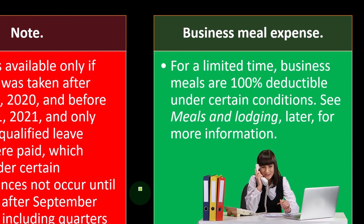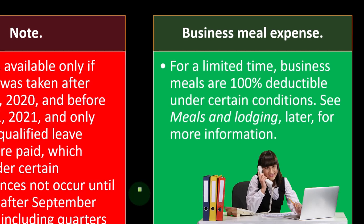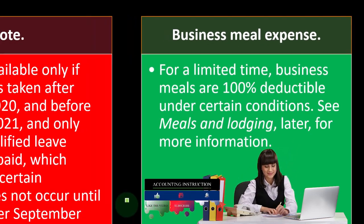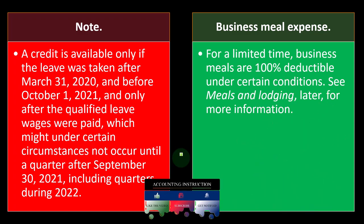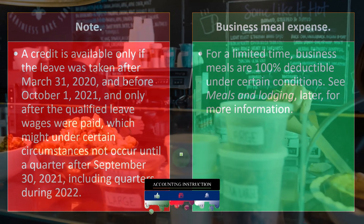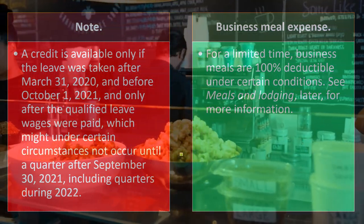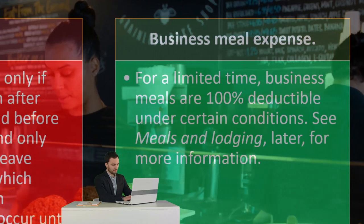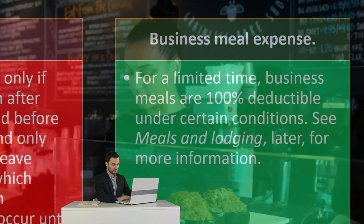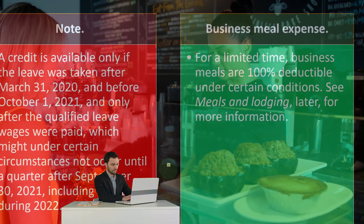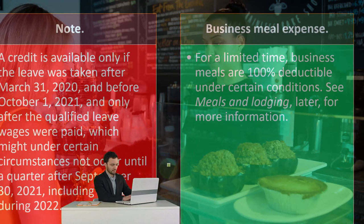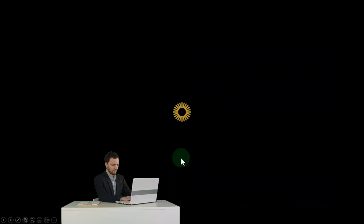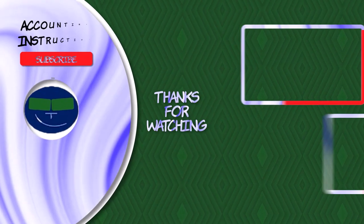Business meal expense. For a limited time, business meals are 100% deductible under certain conditions — see meals and lodging later for more information. This is one of the expenses that's always kind of confusing because it seems to mix up the concepts of business and personal. When we think about deducting meals, we have to make sure that we're properly deducting them. It used to be that meals and entertainment was like 50% deductible, and we have differences between meals and travel expenses. If you're traveling overnight, there can be some differences in the recording. We'll dive into that in more detail when we get into the business expense categories.